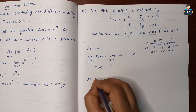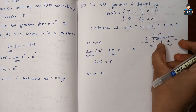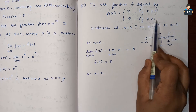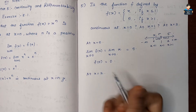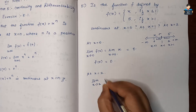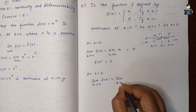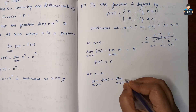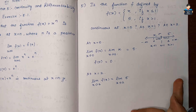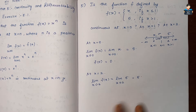At x = 2, since x > 1 the function is the constant 5. Limit x tends to 2 of f(x) = 5. This is a constant function, so it is continuous.